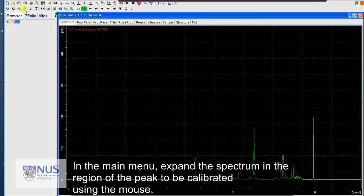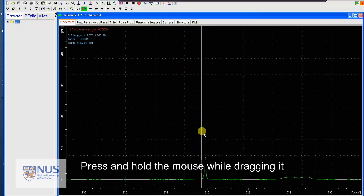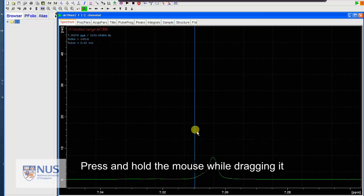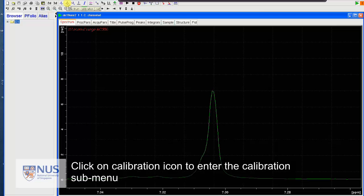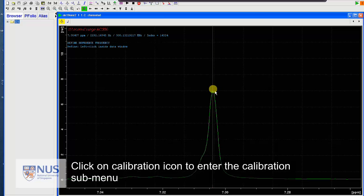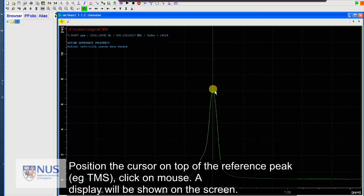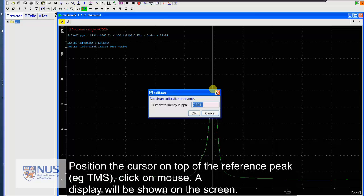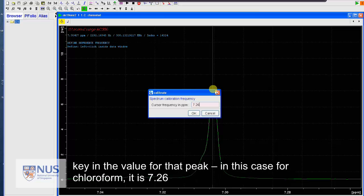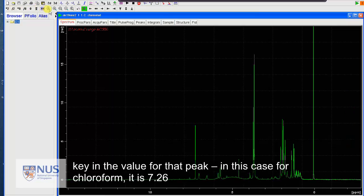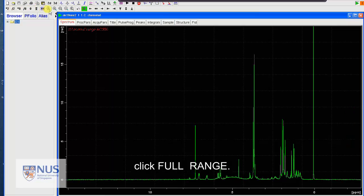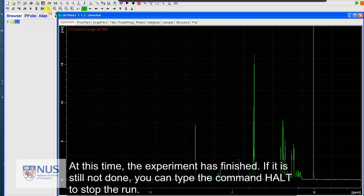In the main menu, expand the spectrum in the region of the peak to be calibrated using the mouse. Press and hold the mouse while dragging it. Click on the icon calibration to enter the calibration sub-menu. Now, position the cursor on top of the reference peak. Click on the peak. Click the mouse. A display will be shown on the screen. Now, key in the value for the peak. In this case, the solvent we are using is chloroform, so the value is 7.26. Click full range.